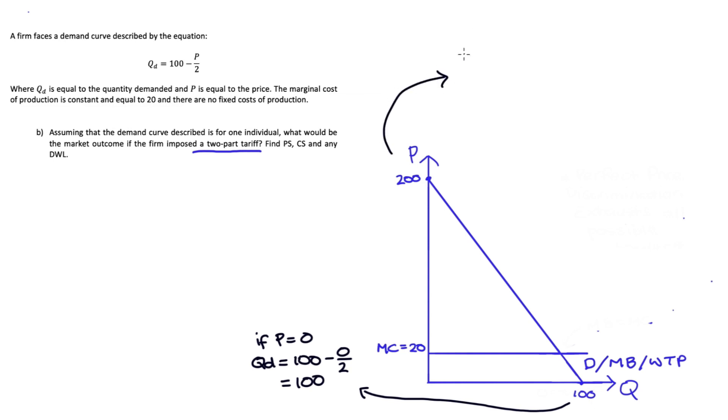The price axis intercept is found when we set quantity equal to zero. So working with my demand curve equation, we get zero equals 100 minus P on two. I can solve for P. Adding P on two to both sides gives P on two equals 100. Multiplying both sides by two gives P equals 200.